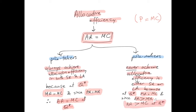Therefore, price or average revenue will always be higher than marginal cost at the level of output where the firm maximizes its profit. So a price taker will always achieve allocative efficiency in both the short run and the long run, while a price maker will never achieve allocative efficiency because AR will always be higher than MC.